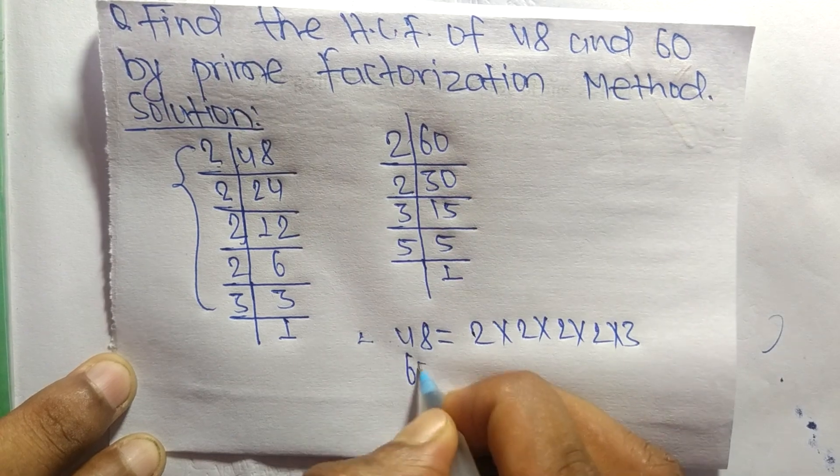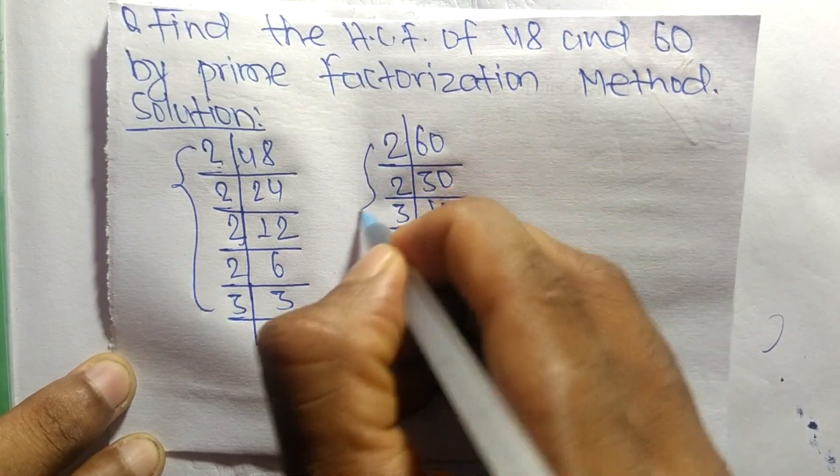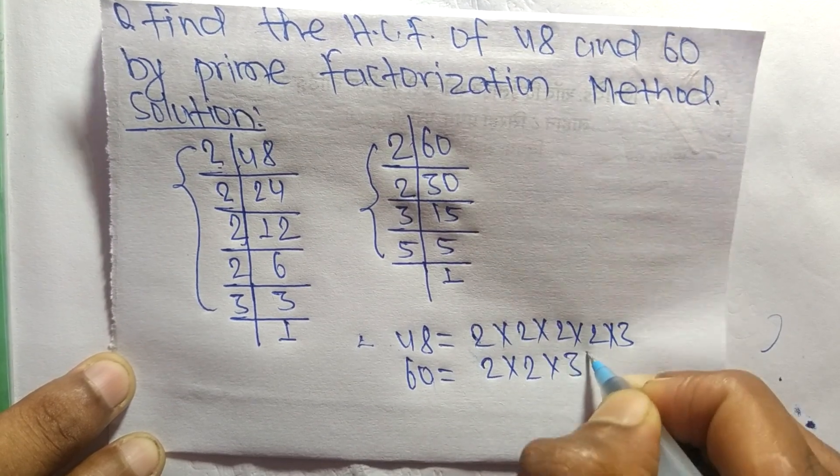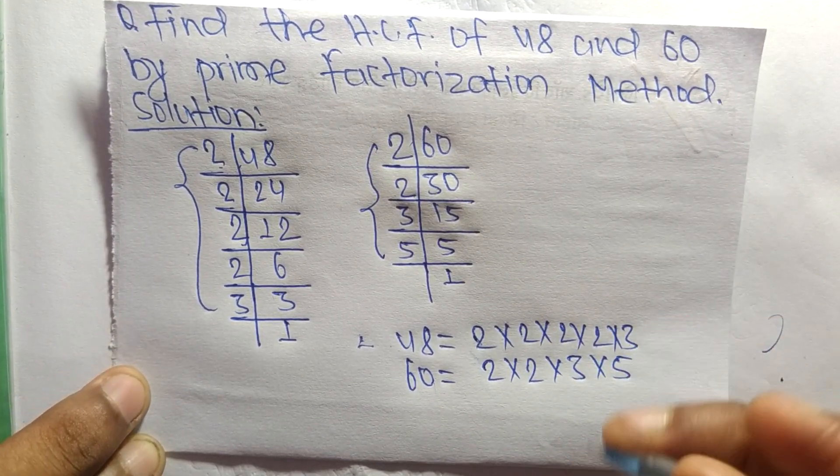Likewise, 60 equals 2 times 2 times 3 times 5. So now...